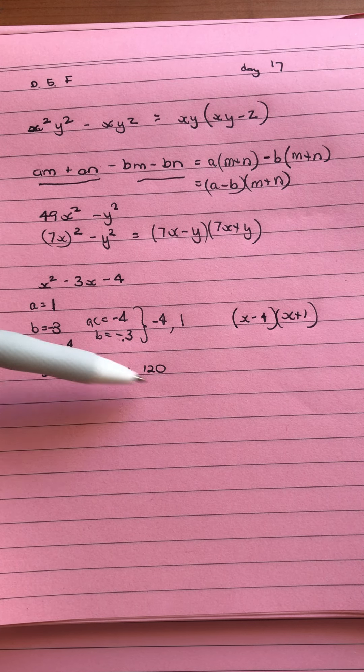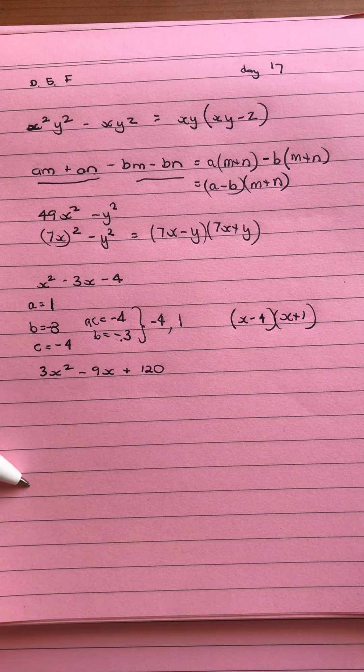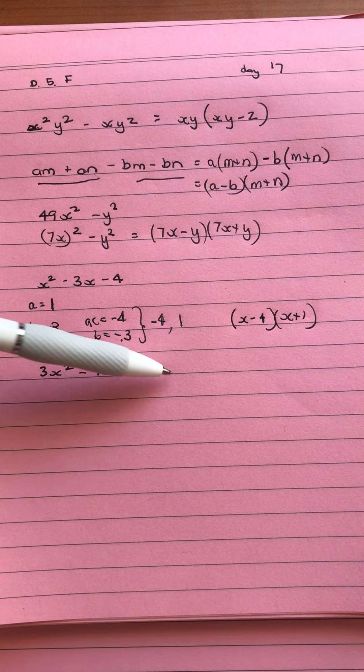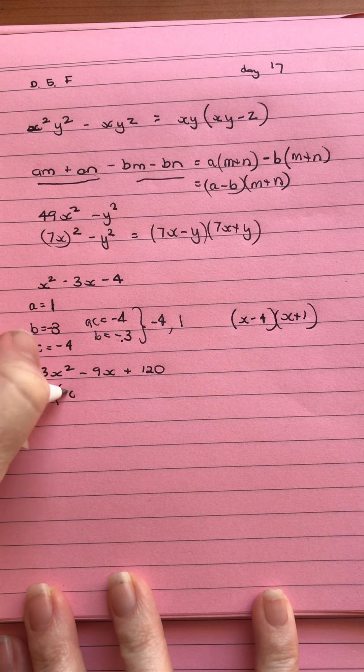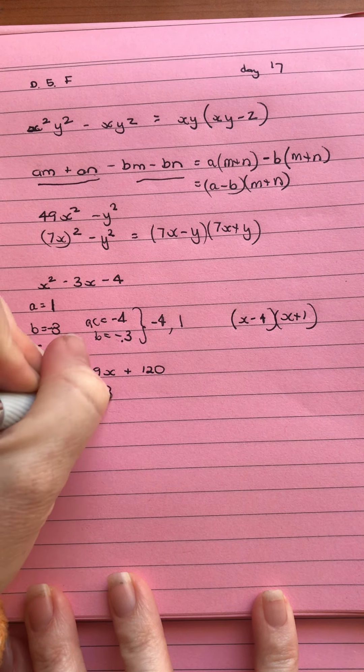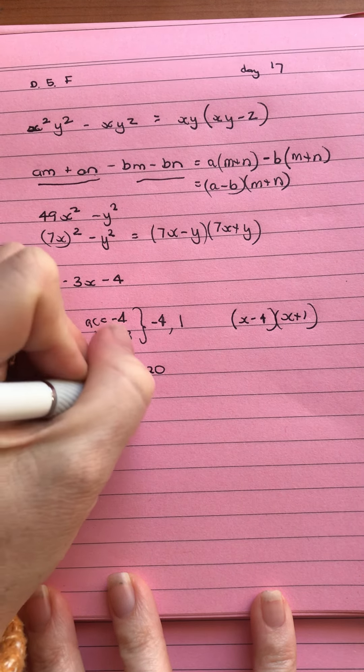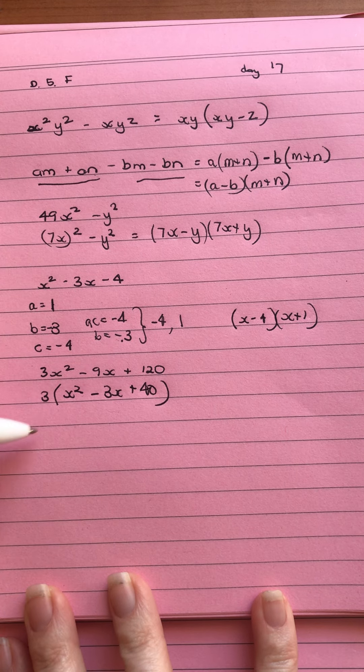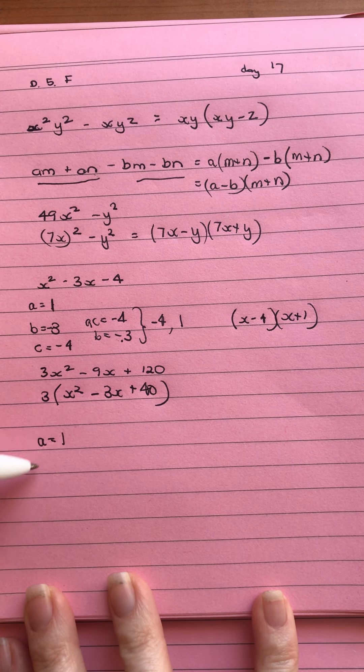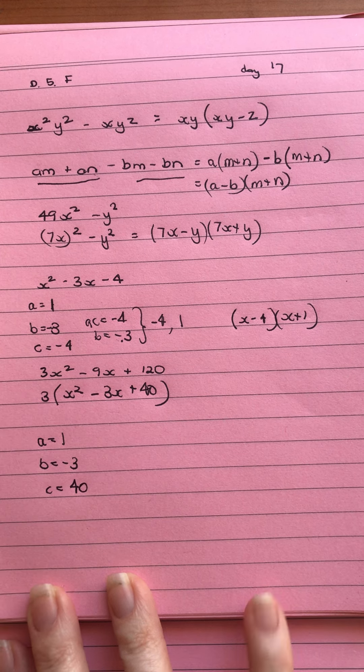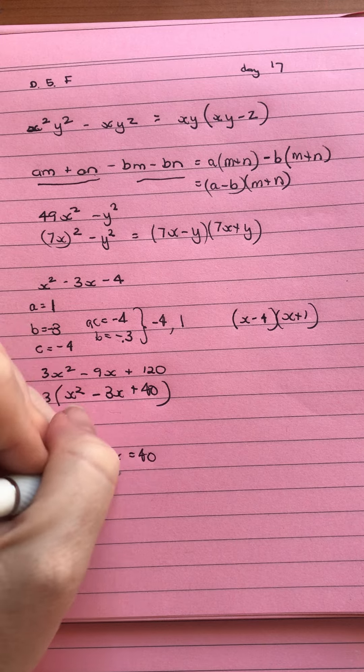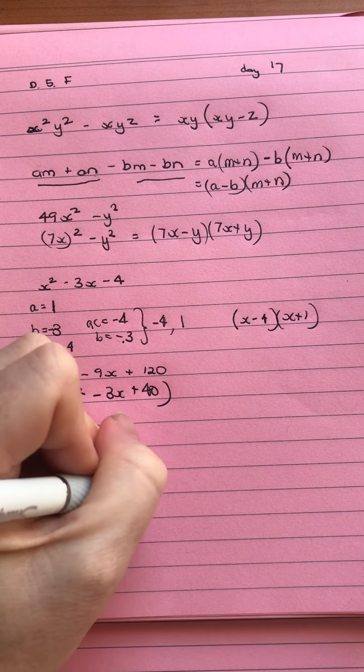Our last one, looking at this one, you may think it's the non-monic and start writing that down. Always look for a common factor first. So 3 goes into all three of those terms. So we can write that as 3x squared minus 3x plus 40. And then we can write our a is equal to 1, b is equal to negative 3, c is equal to 40. So we want something that multiplies to give 40, but adds to give negative 3.